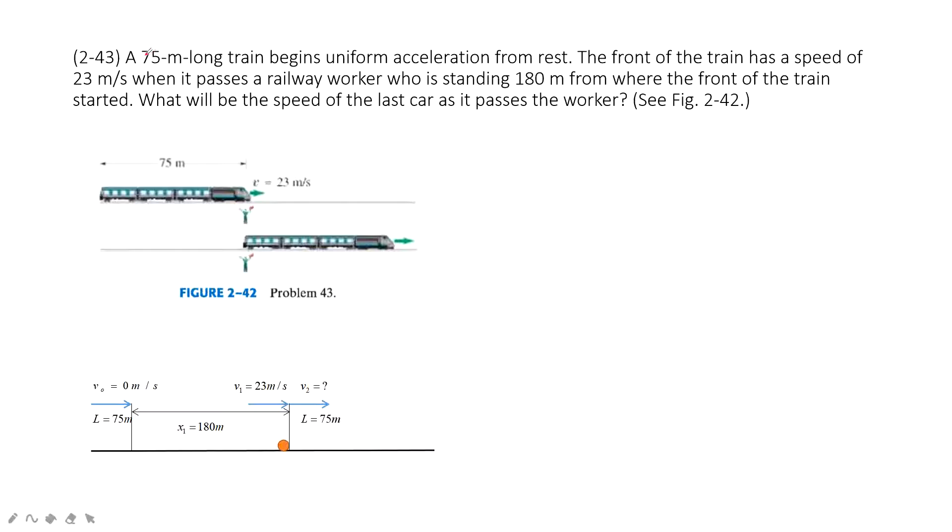It tells us we have a train. The train is 75 meters long, and then it begins uniformly accelerating. So this tells us the acceleration is constant. From rest means stationary, right? So initial velocity is zero.